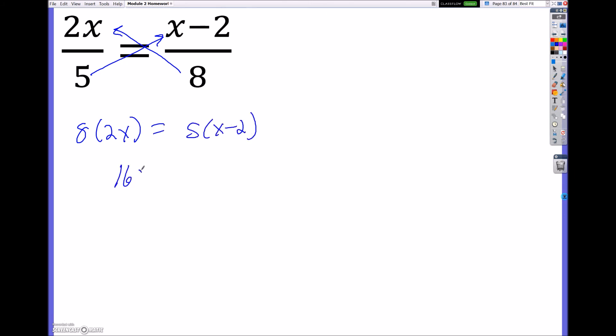So this is going to be 8 times 2x is equal to 5 times x minus 2. When I simplify this, I'm going to have 16x is equal to 5x minus 10. I'm going to minus 5 on both sides, and that will give me 11x is equal to negative 10. And all I'm going to do is divide both sides by 11 to get x is equal to negative 10 all over 11. This is your final answer here.